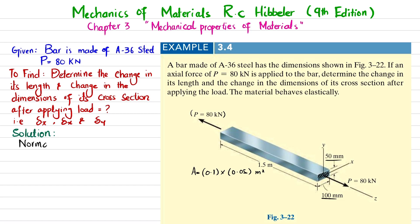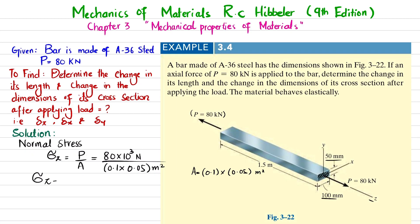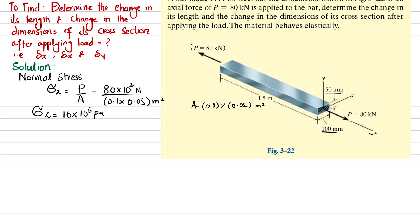Now we find the normal stress. The normal stress acts in the z-direction, so σ_z = P / A = 80 × 10³ N divided by (0.1 × 0.05) m². Solving this gives σ_z = 16 × 10⁶ Pascal.